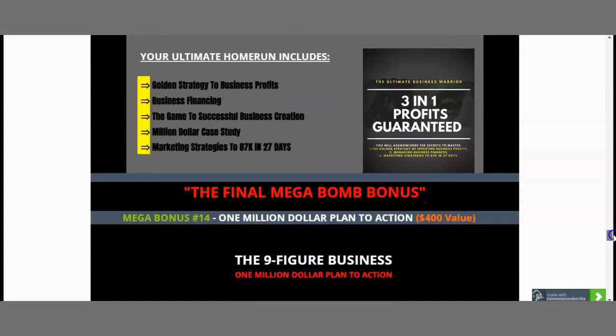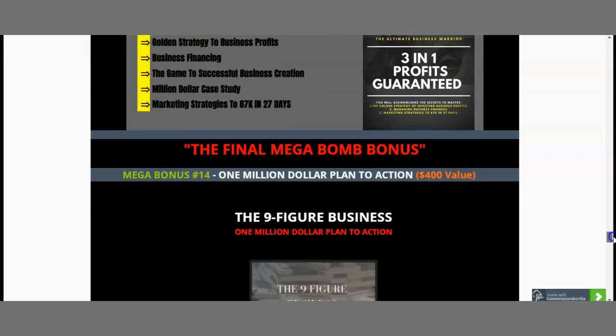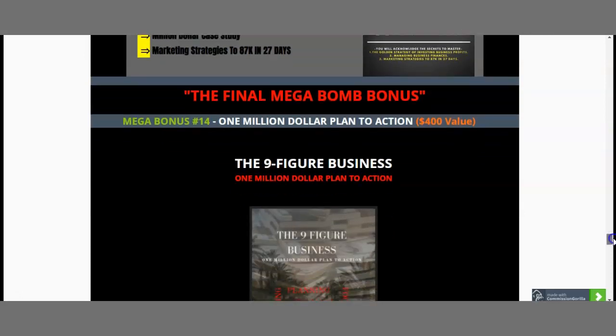And now the final mega bomb bonus, ladies and gentlemen, worth $400. This is the 1 million dollar plan to action — the 9 figure business plan. Within this bonus, you'll get: 1) the first strategy to build an empire rather than sloppy profit, 2) how to generate your first million dollars, 3) how to understand the concept of money like 9-figure businesses, 4) how and where to invest your profits, and 5) how 9-figure businesses scale, grow, and retain their buyers list.